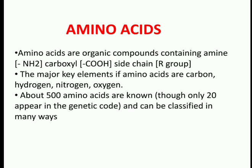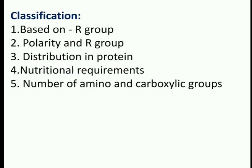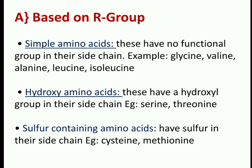These 20 amino acids can be classified in many ways. This is the basic structure of amino acid containing an amino group, a carboxyl group, and the side chain R. The 20 amino acids present in the genetic code can be classified on the basis of R group, R group polarity, distribution in protein, nutritional requirement, and number of amino and carboxyl groups present.